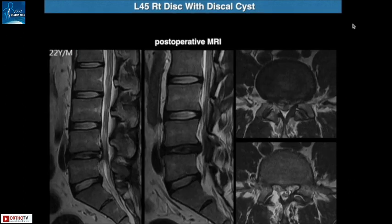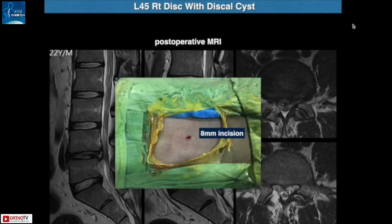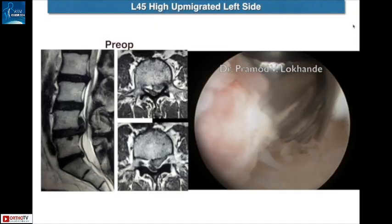These are the post-operative MRIs showing complete removal of the disc herniation. And all of this has been done through an 8 mm incision. There is no need for insertion of any drain post-operatively.